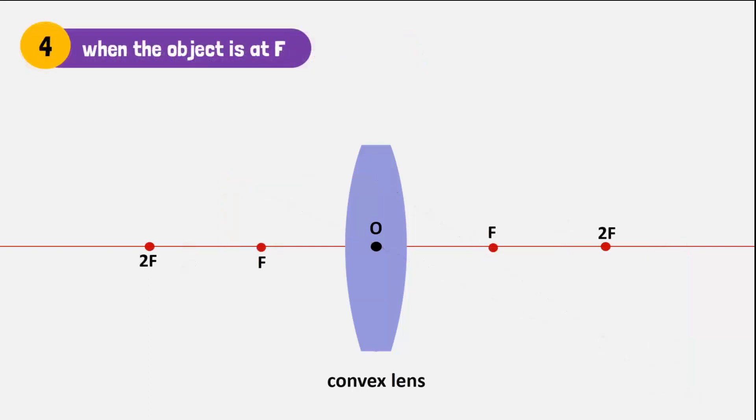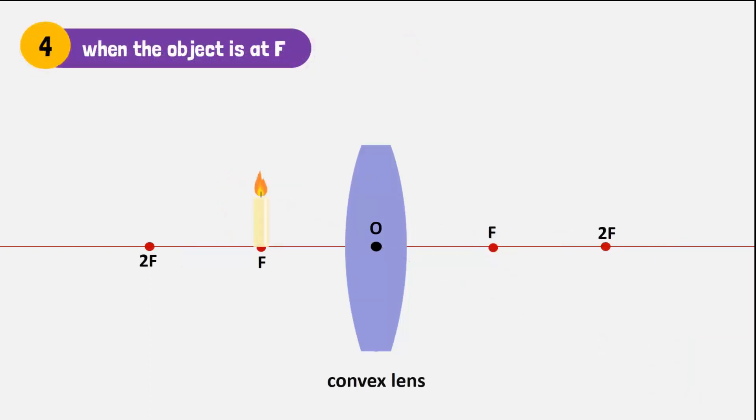But what if the candle is placed at point F? Well, the rays of light will become parallel after refracting through the convex lens and will form an image at infinity. The image is real, inverted, and greatly magnified.